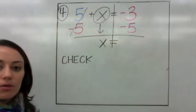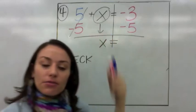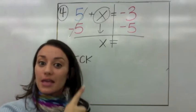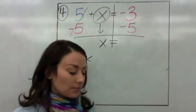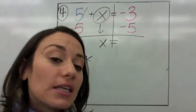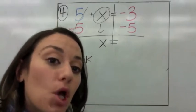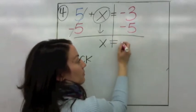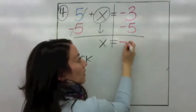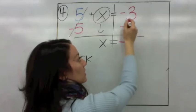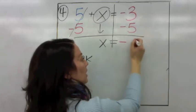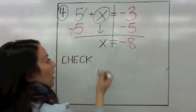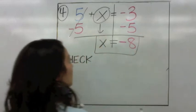What does x equal now? You have a negative 3 and a negative 5 — are they the same signs? Yes. So same signs: add these numbers and keep the sign. It's negative. You're adding 5 and 3: 5, 6, 7, 8. So the value of x that we found is negative 8.